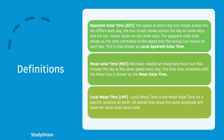Because the actual sun is unreliable in providing a steady measure of time, we have created an imaginary mean sun that crosses the sky at the same speed every day. The time that correlates with this sun is known as the mean solar time. The local mean time is the mean solar time for a specific location on Earth, and all places that share the same longitude will have the same local mean time.